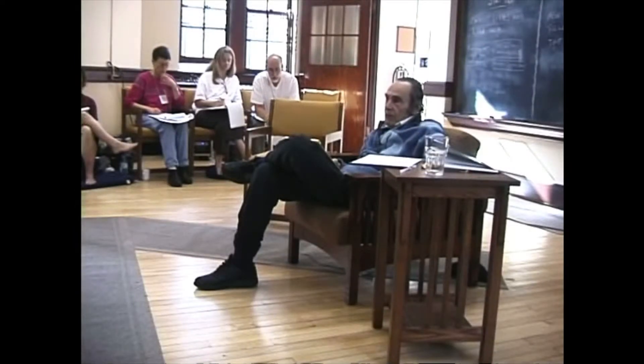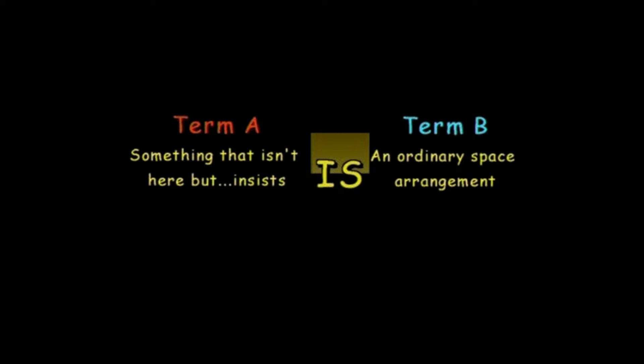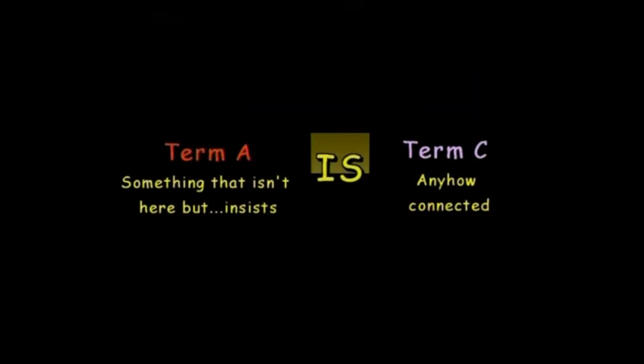And the first one is the big 'is' — the equals sign. A equals B, and A equals C. And at this point, I don't know what I am saying; I don't know what I am talking about. I will see. So I'm saying A — something that isn't here but insists — is an ordinary space arrangement. And also, something that isn't here but insists is anyhow connecting.